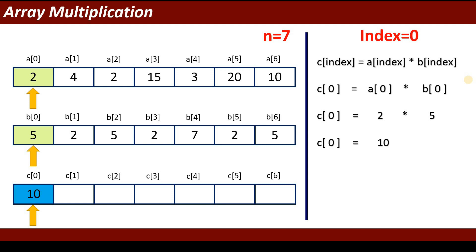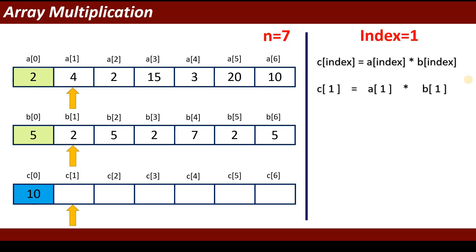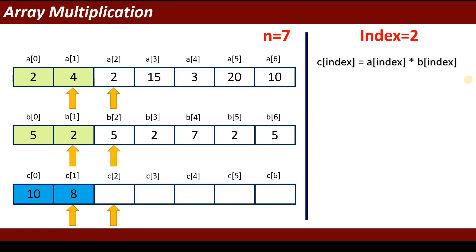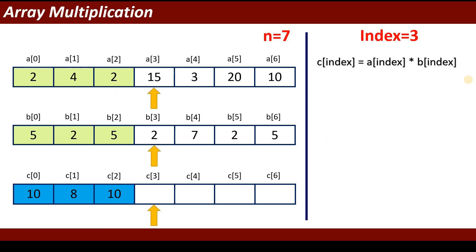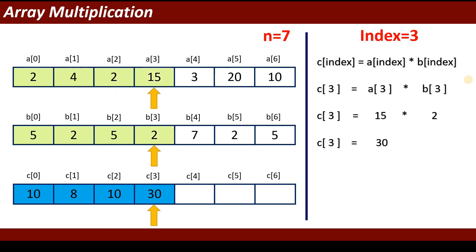When index is 1: c[1] = a[1] * b[1]. The value of a[1] is 4 and b[1] is 2, so 4 multiplied by 2 gives 8, and 8 is stored into c[1]. When index is 2: the value of a[2] is 2 and b[2] is 5, so 5 multiplied by 2 gives 10, and 10 is stored into c[2].